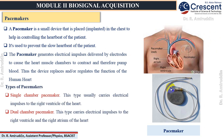There are two types of pacemakers. The single chamber pacemaker carries the electrical impulse only to the right ventricle of the heart. The dual chamber pacemaker carries the electrical impulses to both the right ventricle and the right atrium of the heart.